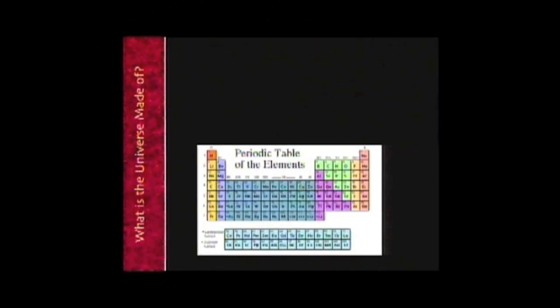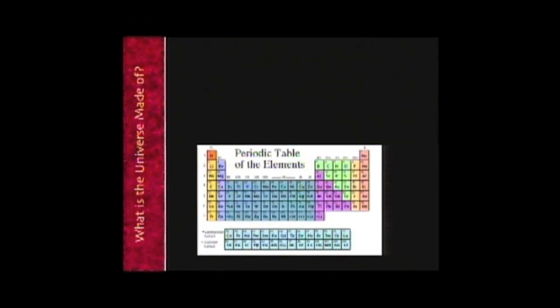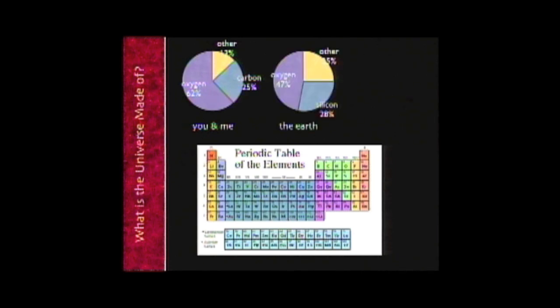So, we actually just heard in the last talk that we are all made of atoms. Everything, if you've taken chemistry, you learn that everything is on this periodic table. You and me are made mostly of oxygen and carbon. The Earth is made mostly of oxygen and silicon. And the atmosphere is made mostly of oxygen and nitrogen.